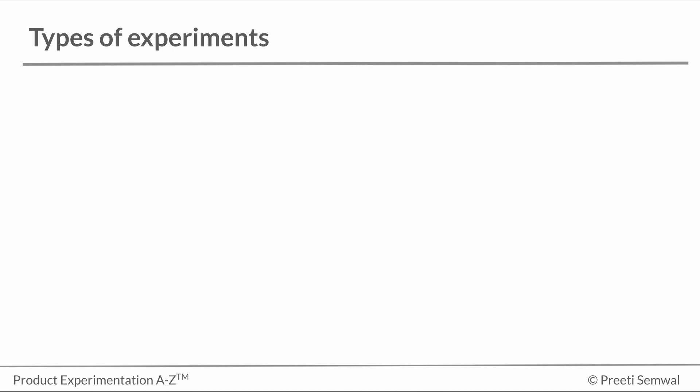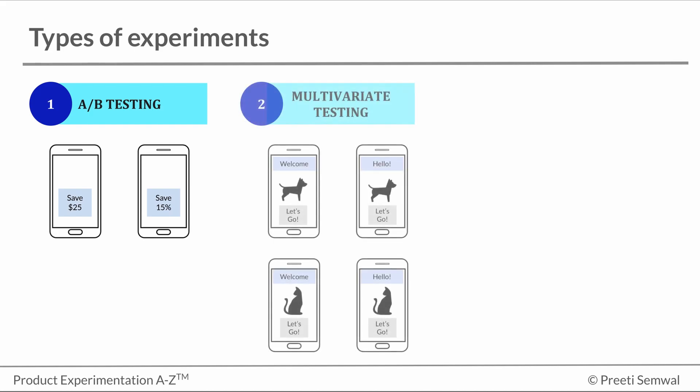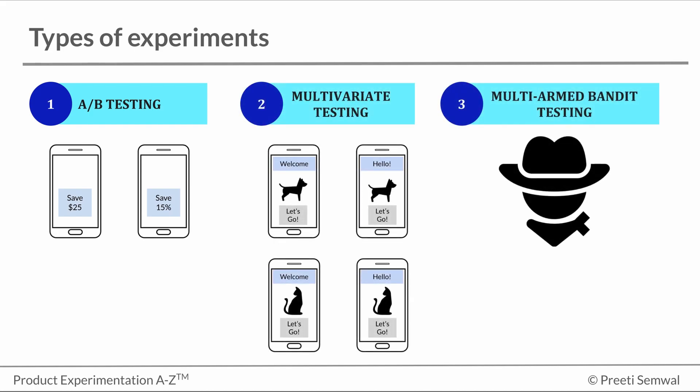There are three different ways in which product experiments can be run: A-B testing, multivariate testing, and multi-arm bandit testing. We will learn each of these in detail through some examples.